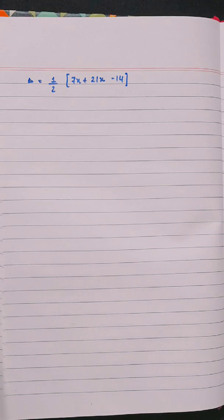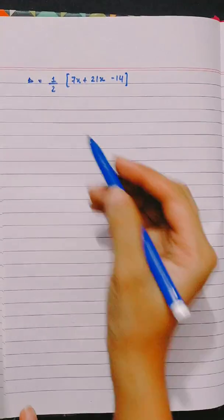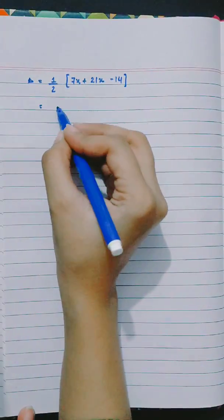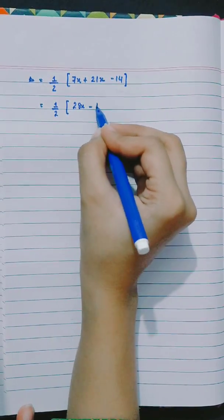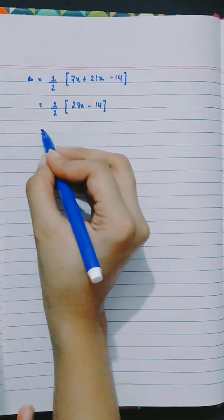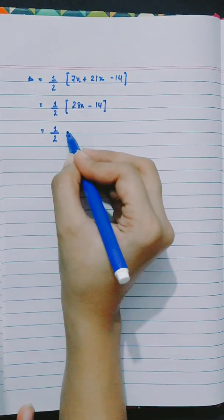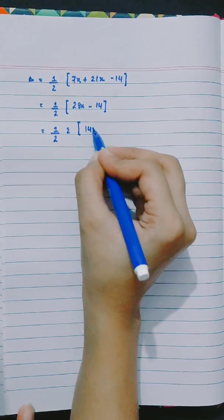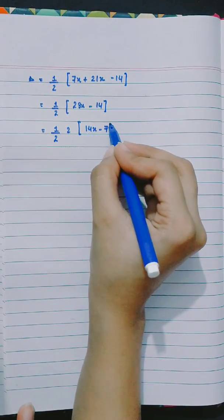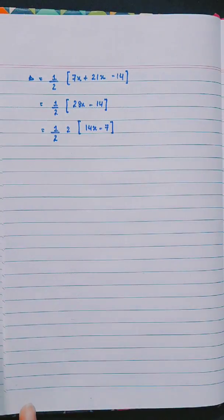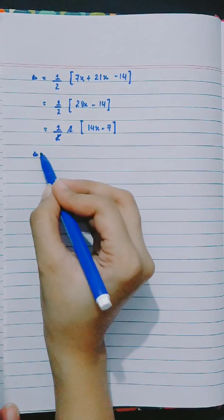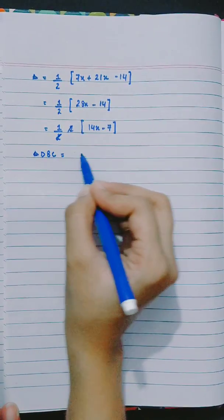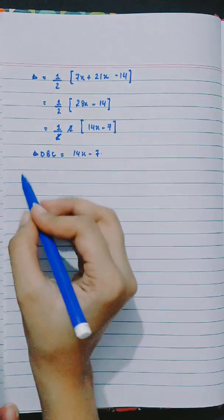Area is equal to half of 7x plus 21x minus 14, equals half of 28x minus 14. Taking 2 common: 14x minus 7. Therefore area of triangle DBC is equal to 14x minus 7.